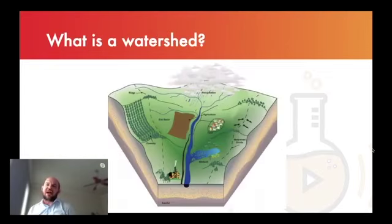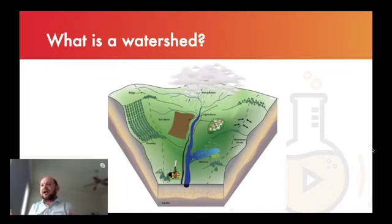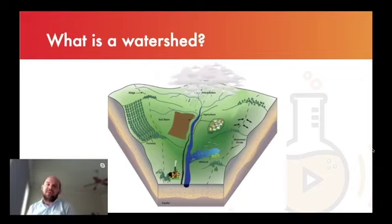A watershed is the area of land where all of the rainwater and precipitation that falls on the same area will eventually drain to the same location. This cartoon diagram shows a theoretical watershed. To the left and right edges you can see dashed lines representing ridges or watershed divides. If there was a mountain range, for example, one side water would flow one way, the other side water would flow the other way. Everything where water flows into the same location represents a watershed.